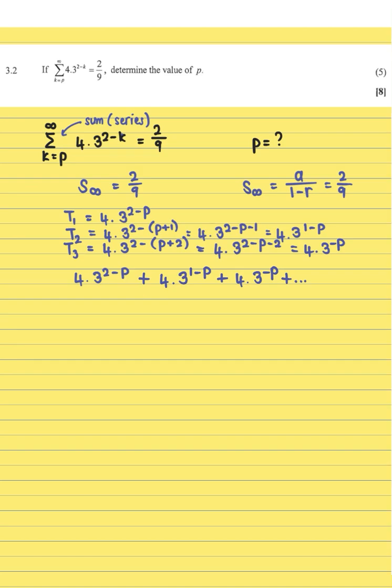If you're having trouble seeing what your ratio is, remember you can always take term 2 over term 1 or term 3 over term 2. In this case it would be easier to do term 3 over term 2. We have 4·3^(-p) divided by 4·3^(1-p). The fours cancel out. We're left with two powers that have the same bases. When dividing powers with the same bases, you take the top exponent minus the bottom exponent.